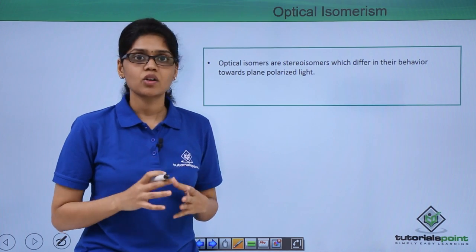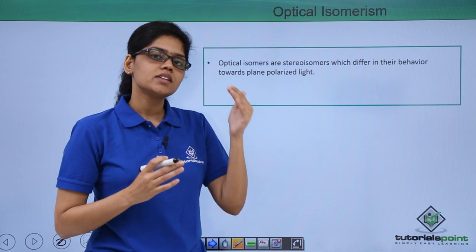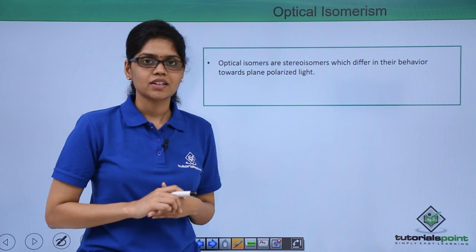I hope you are very clear on what are stereoisomers, how they differ from structural isomers and what are the different types of geometrical isomers as we have just seen. Thank you.